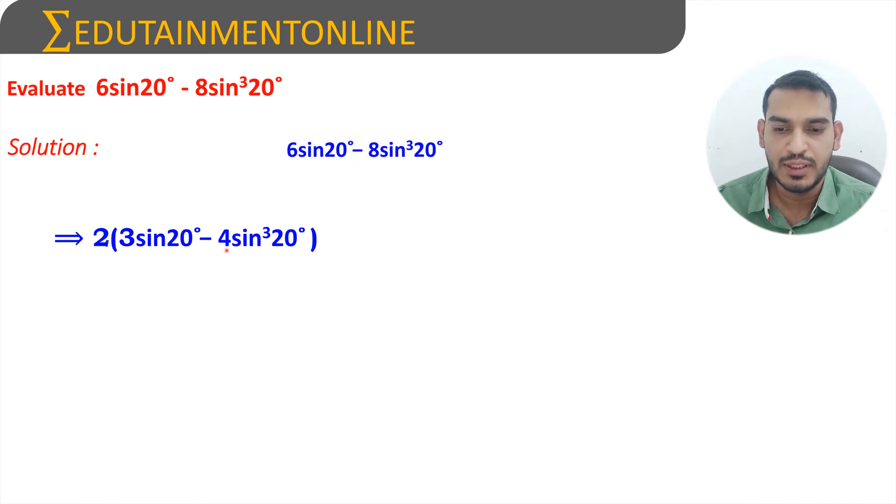This is in the form of 3 sine theta minus 4 sine cube theta. We know the formula for sine 3 theta, which is 3 sine theta minus 4 sine cube theta. Here in place of theta we have 20 degrees, rest all the same.